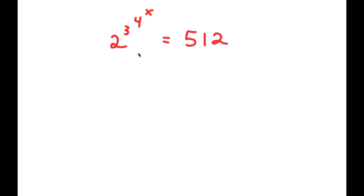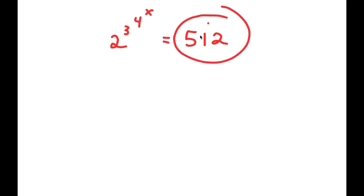In this problem, I have 2 to the power of 3 to the power of 4 to the power of x is equal to 512. To solve this, I'm going to first start by rewriting 512. So 512 is the same thing as 16 times 32.